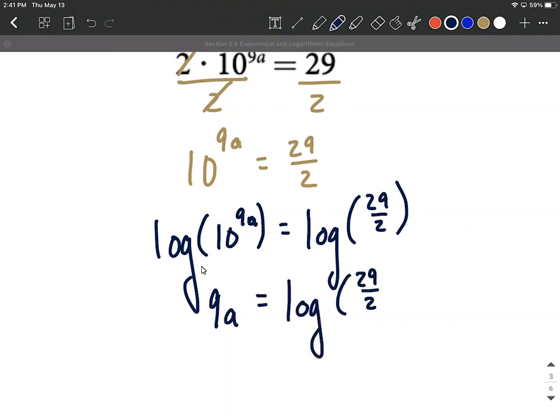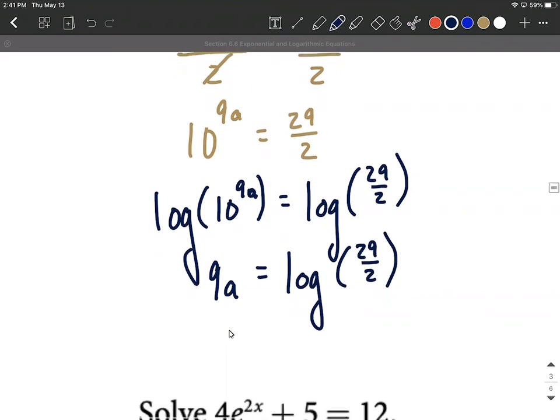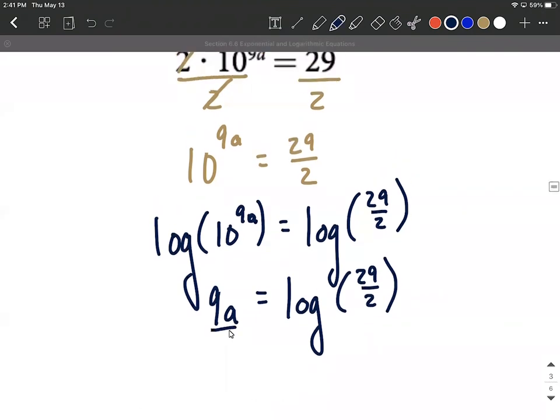Bringing the right-hand side down, we have log of 29 over 2. Now we just need to solve for a, so we need to get rid of that 9. We're going to divide both sides by 9. That'll put a on the left-hand side all by itself.